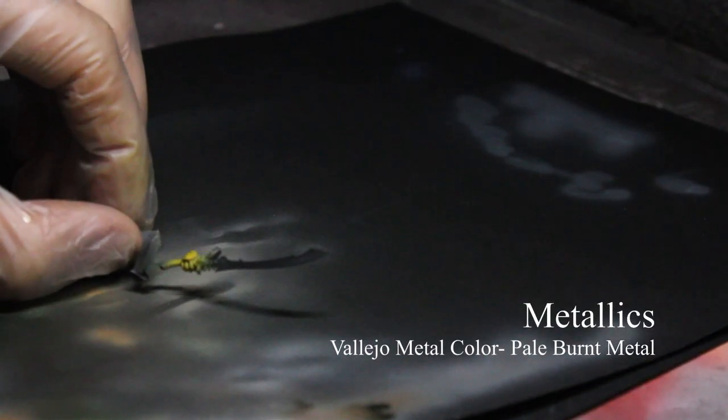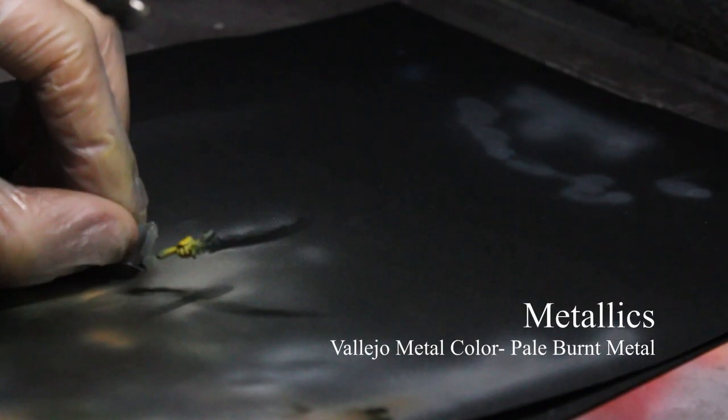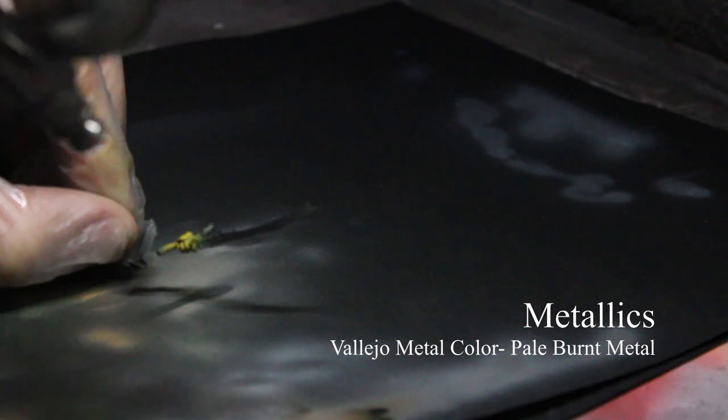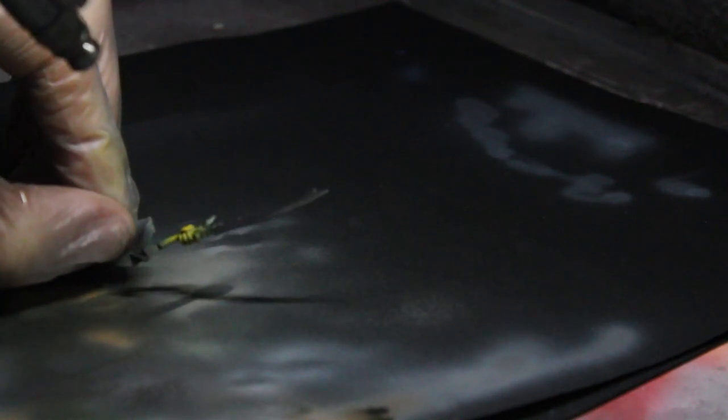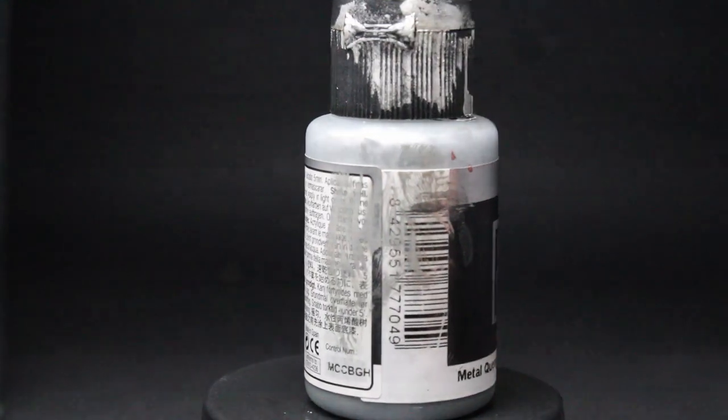The next step will be to apply the base layer of Vallejo Metal Color Burnt Iron to the melee weapons. You can do this with a bristle brush or airbrush, as it is a very smooth paint.